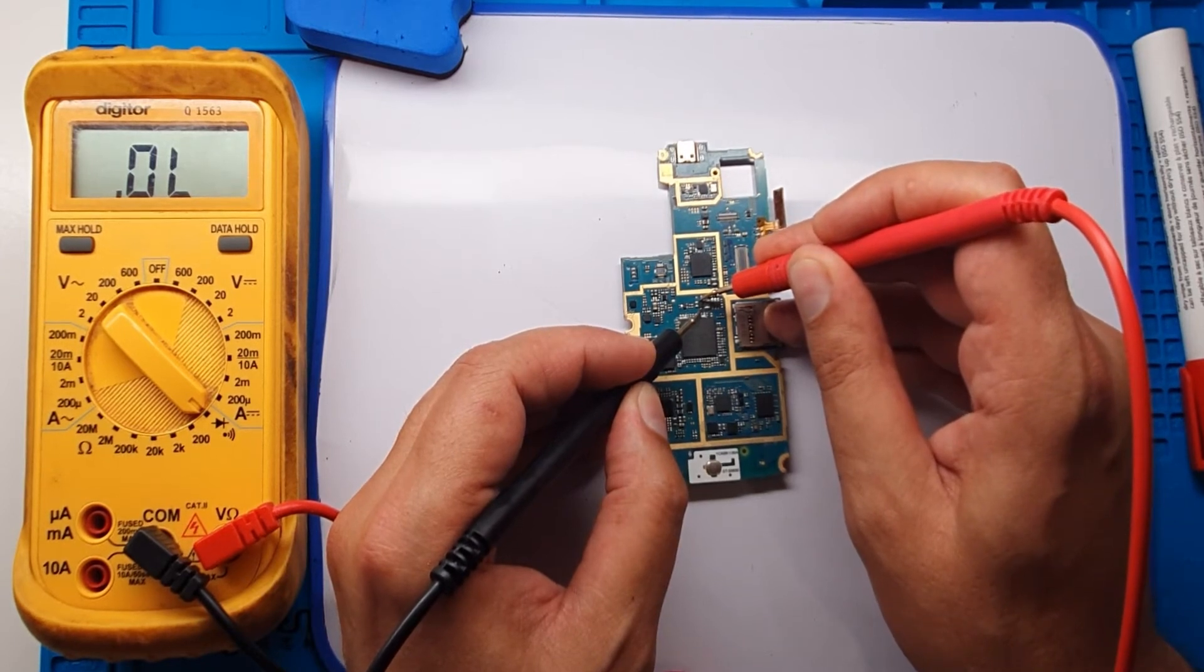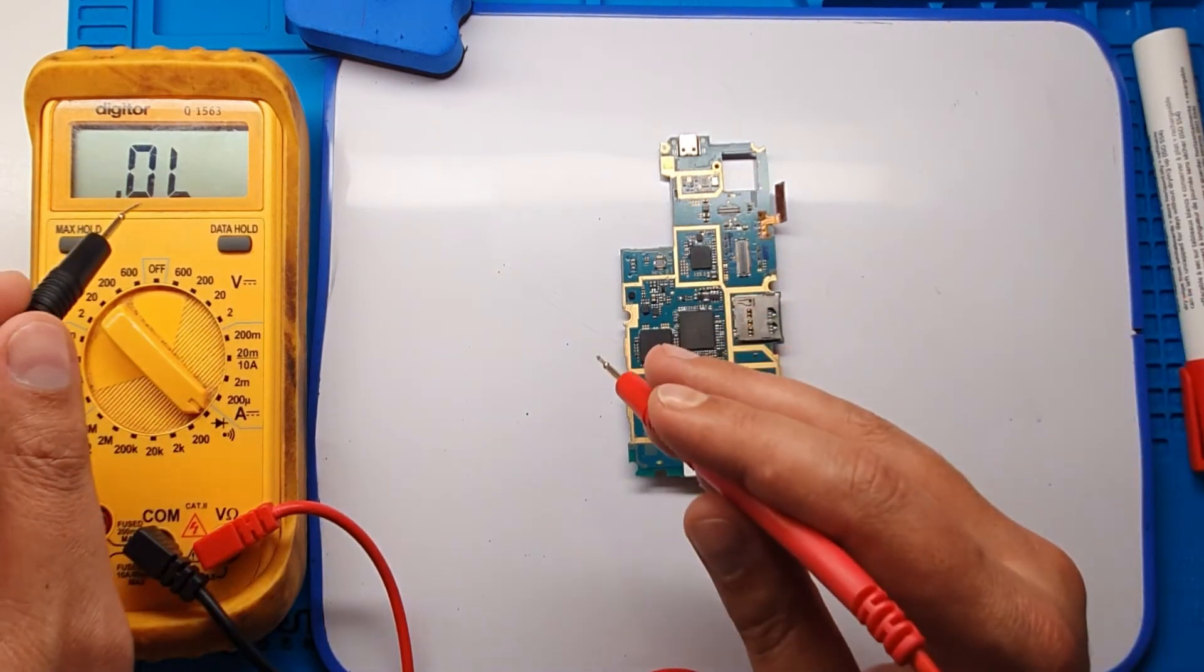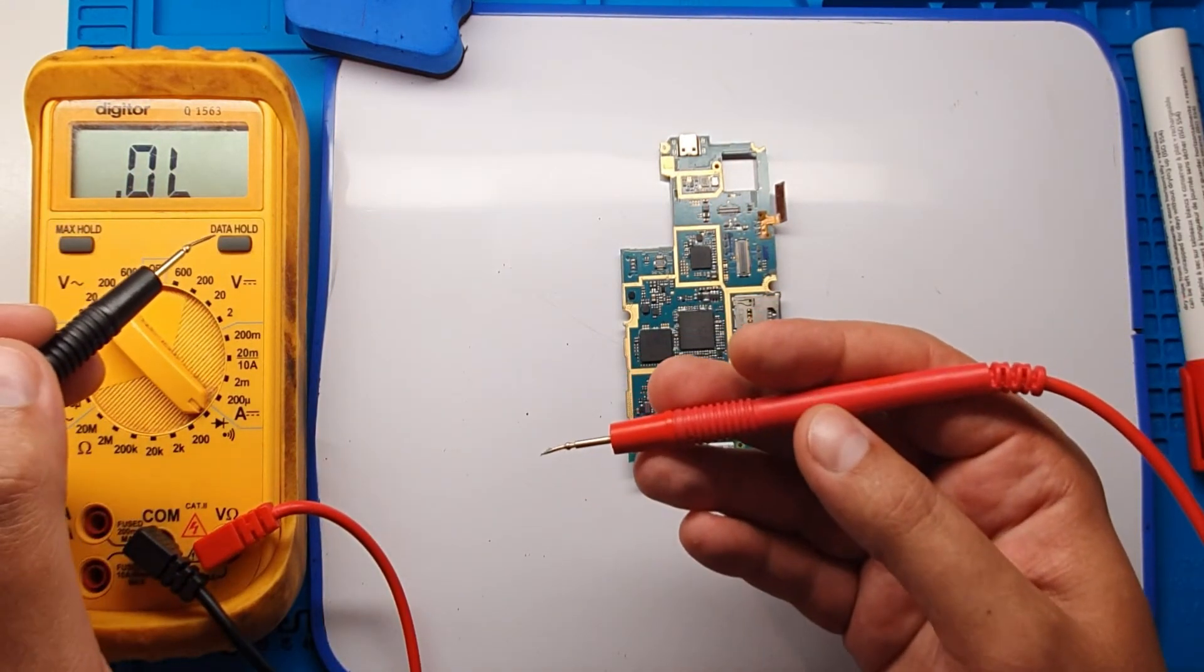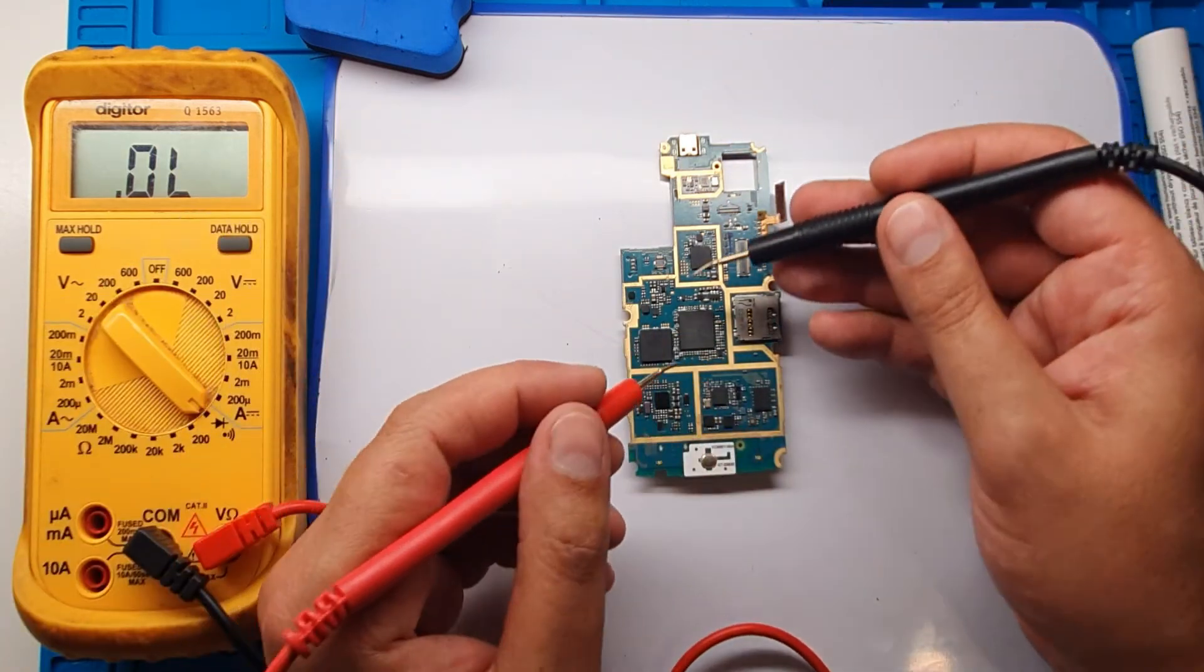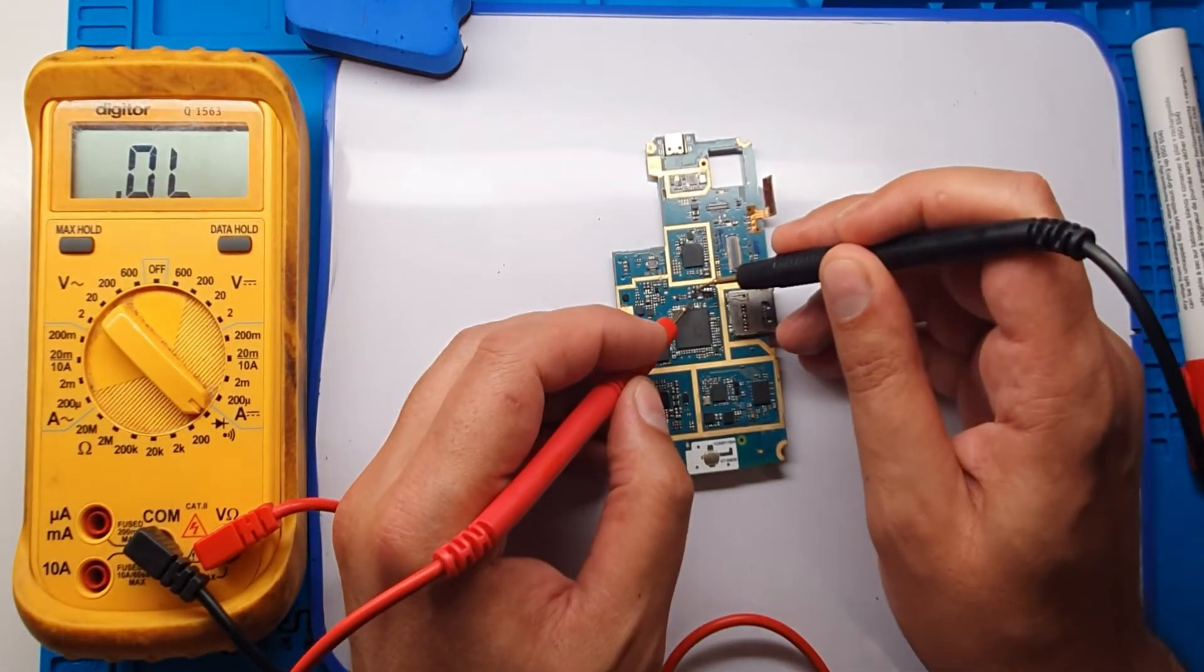When you put it in first, the multimeter shows OL, looks like this. It means not connected. When you swap the cable and black probe to the top and red one.